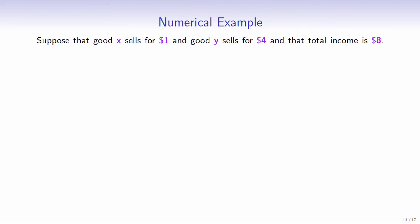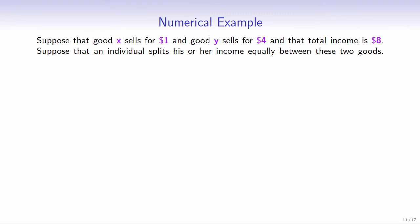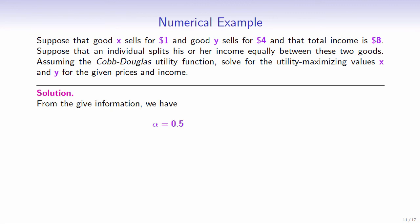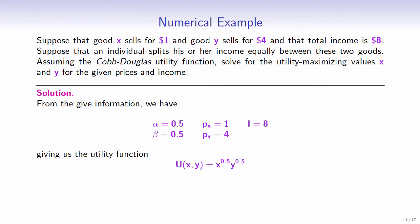Let's look at a numerical example. Suppose good x sells for $1, good y sells for $4, and total income is $8. An individual splits income equally between the two goods. Assuming the Cobb-Douglas utility function, we solve for the utility-maximizing values of x and y. From the given information, alpha and beta equal 0.5, the price of good x equals 1, the price of good y equals 4, and income equals 8, giving utility function u(x,y) = x^0.5 times y^0.5, subject to the budget constraint 8 equals x plus 4y.